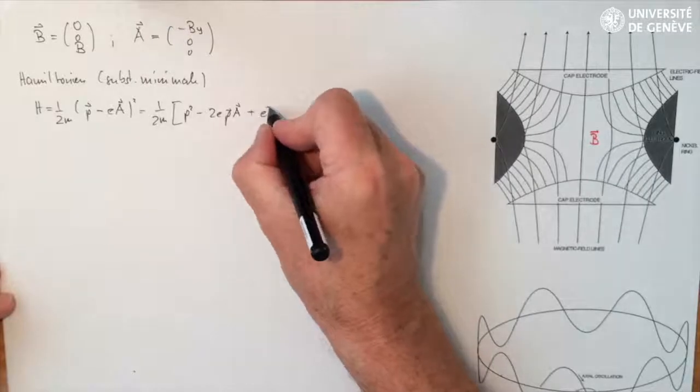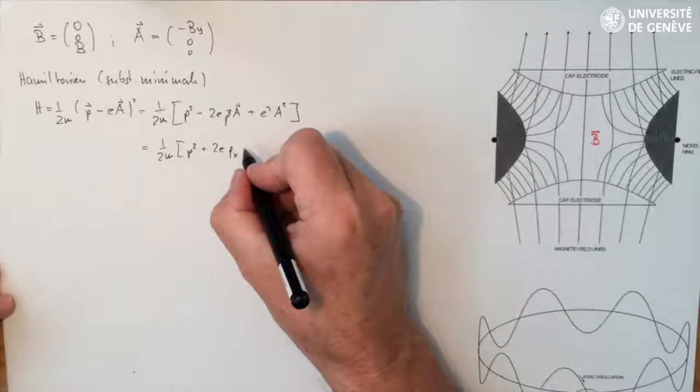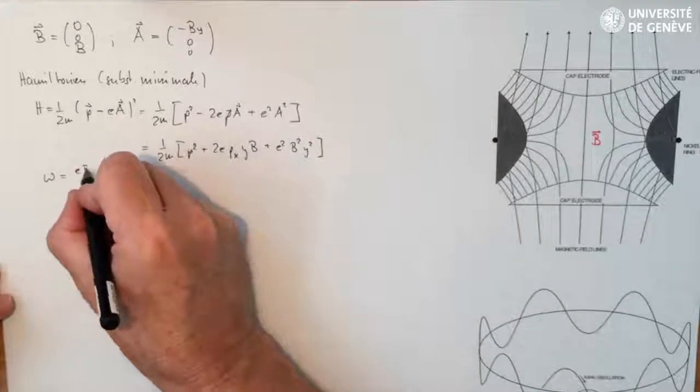So with a bit of trivial mathematics, we find 1 over 2m times (p plus 2m omega y px plus m squared omega squared y squared).